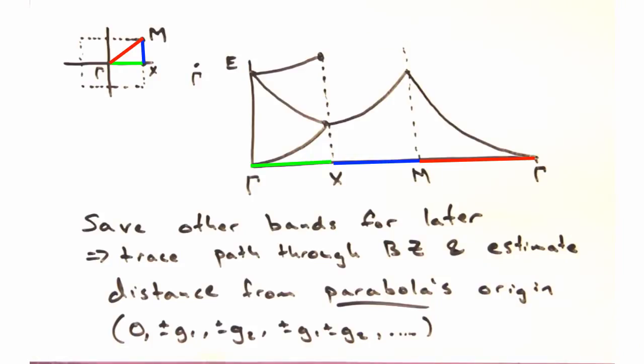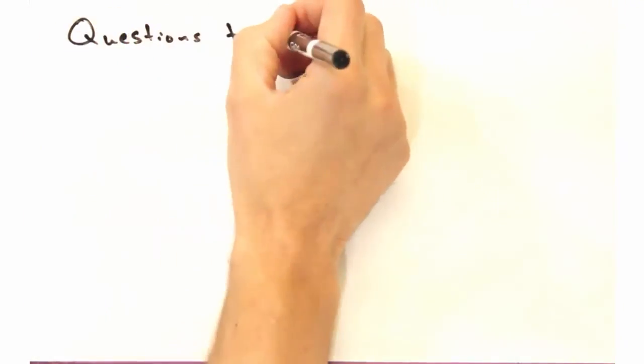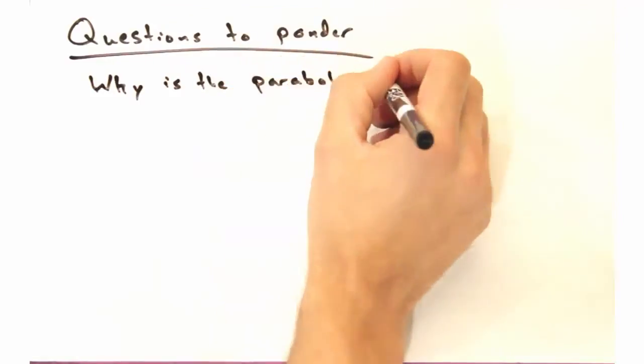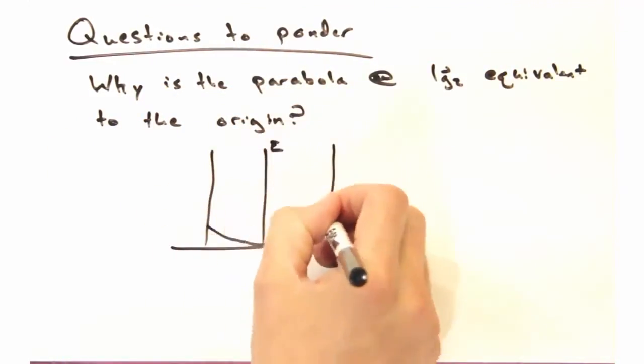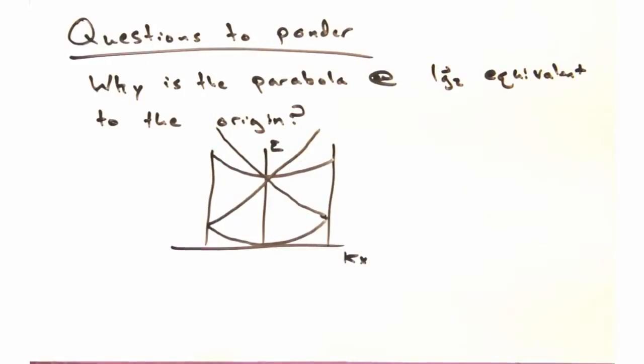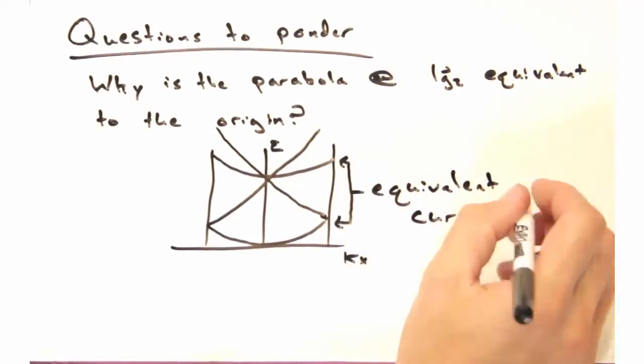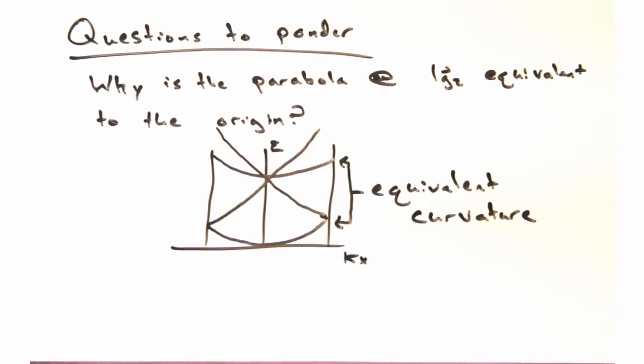And with that, we've wrapped up band structure diagrams. As a question to ponder, see if you can prove mathematically why the parabola shifted by 1G2 is equivalent to the parabola at the origin. And by equivalent, you mean it has the same curvature, although it's at a higher energy. Yeah. Okay.